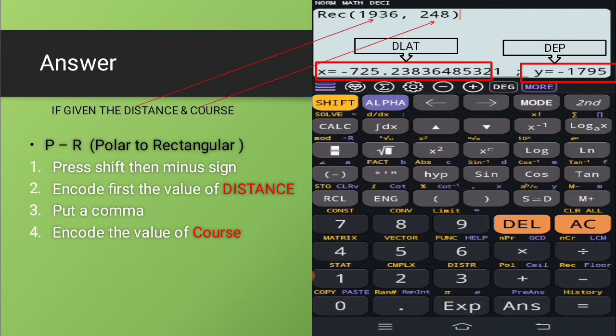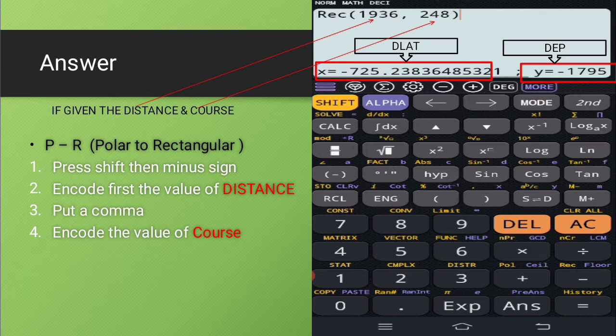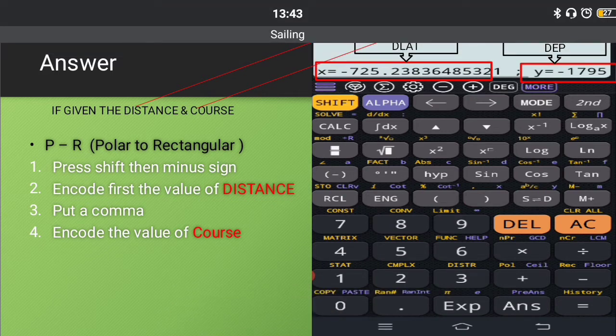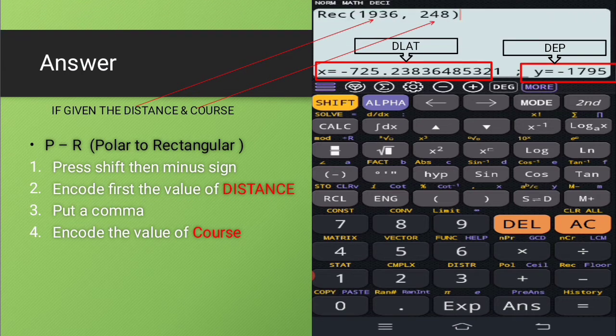So based on the first example, we have here the given distance and the course. So all we need to have also is a calculator. In my case, I have here a scientific calculator, not an ordinary calculator, but scientific calculator downloaded at Google Play Store since I have an Android device.